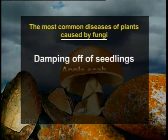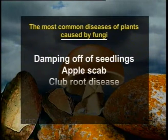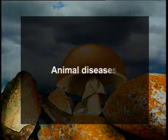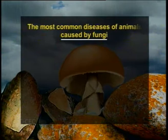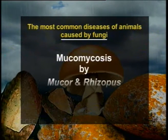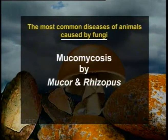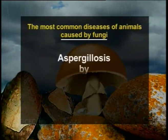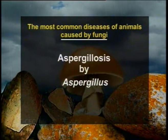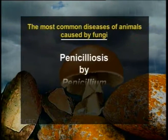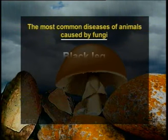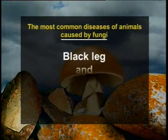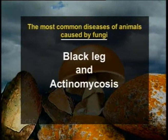Other plant diseases caused by fungi include damping off of seedlings, apple scab, and club root disease. Many parasitic fungi are also responsible for causing diseases in animals, especially domestic ones. For example, mucormycosis is caused by Mucor and Rhizopus; aspergillosis is caused by Aspergillus; and penicilliosis is caused by the genus Penicillium. Other common diseases of animals caused by fungi include black leg disease and actinomycosis.